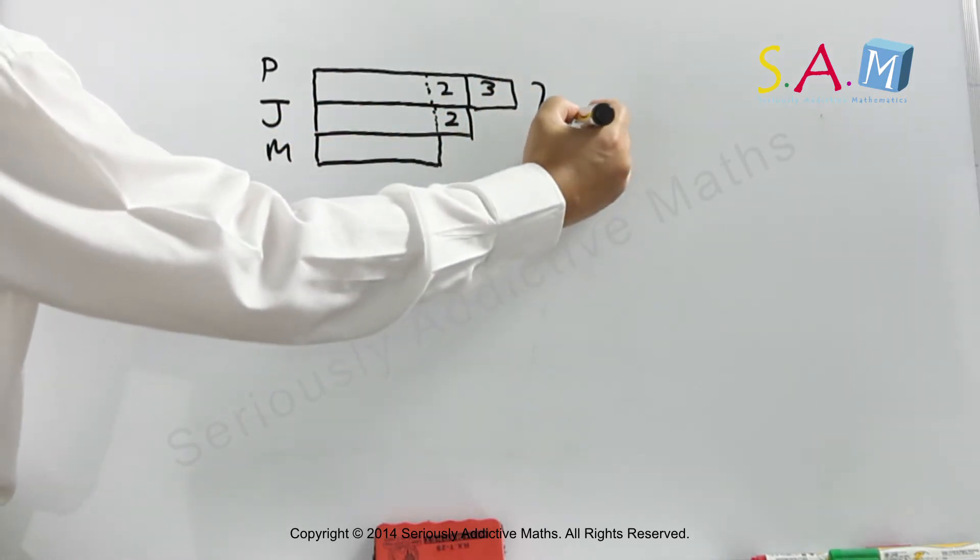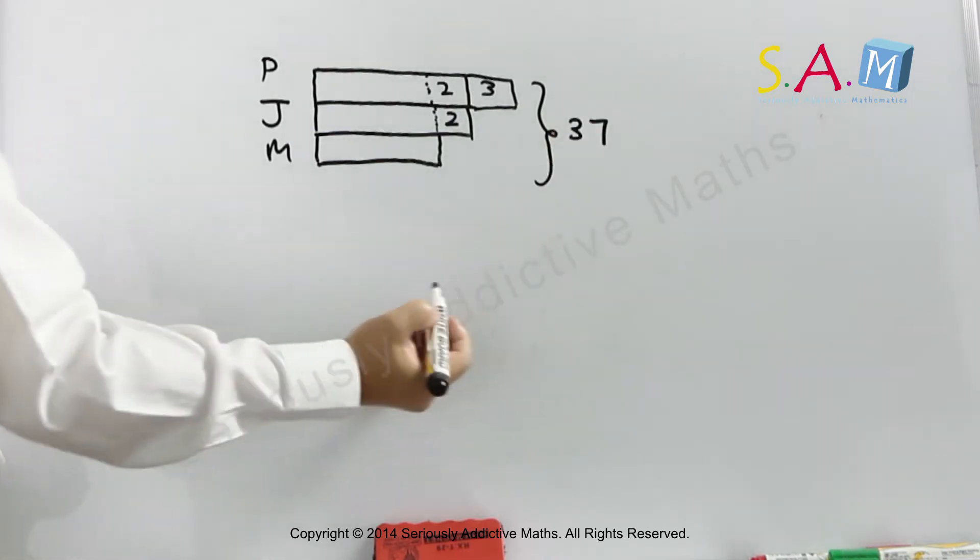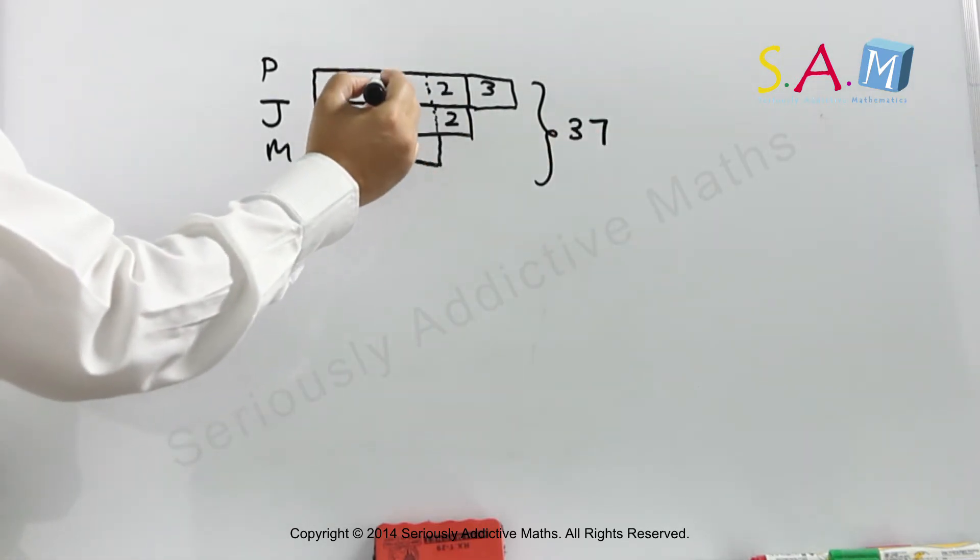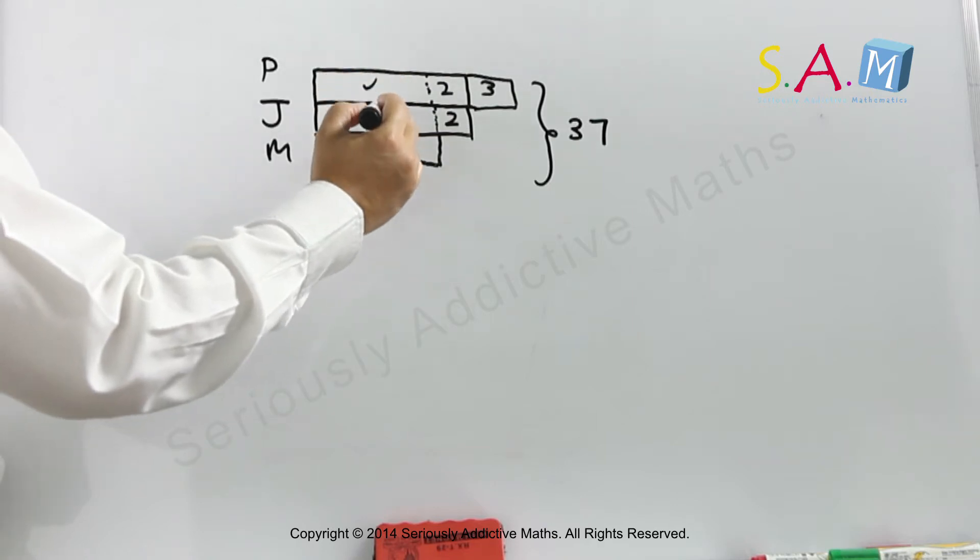And the combined age is 37. So we have three units here as you can see: one, two, three.